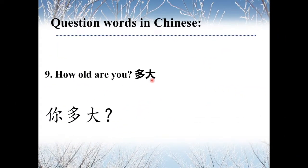Number nine: 多大 means 'How old.' When you ask about age, you use 多大. For example, 你多大? — How old are you? And 他多大? — How old is he?